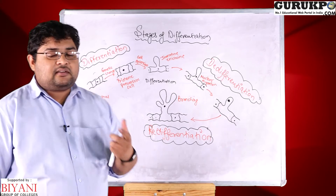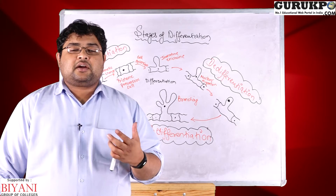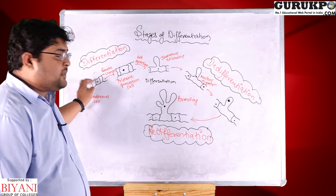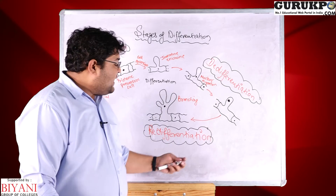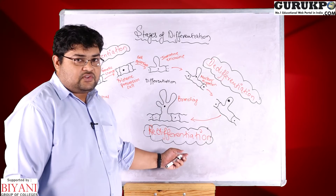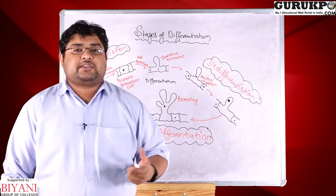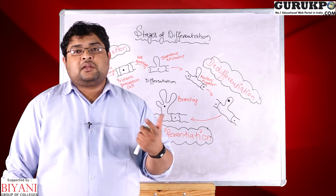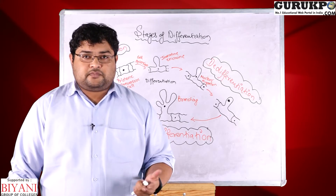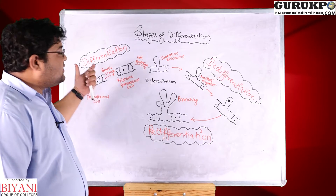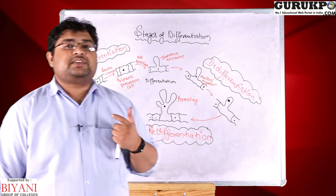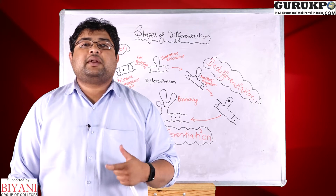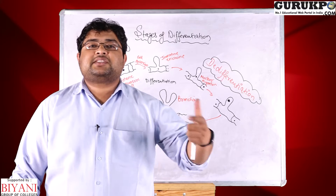There are certain terms which are highly confusing when used together. First is differentiation, second is de-differentiation, and the last is re-differentiation. All three terms are highly specific and regularly used when we do plant tissue culture experiments as well as the transgenic plant production system. Differentiation is the conversion of a normal dividing cell into a specific type of cell.